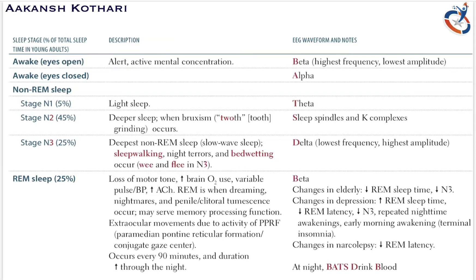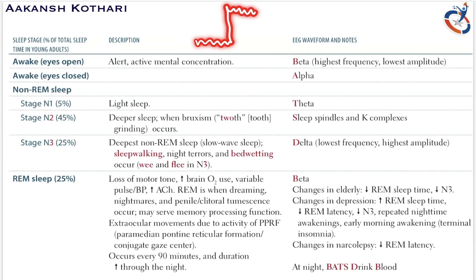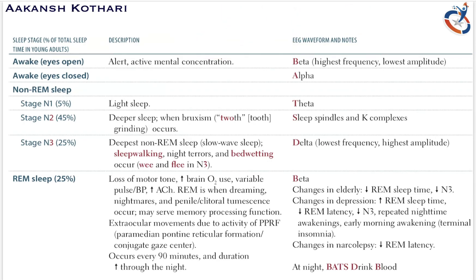During REM sleep there is excessive extraocular movement due to activity of the PPRF — the paramedian pontine reticular formation, also called the conjugate gaze center — which controls eye movement. REM sleep occurs every 90 minutes and its duration increases through the night. Non-REM and REM sleep alternate continuously, with each REM period growing longer.